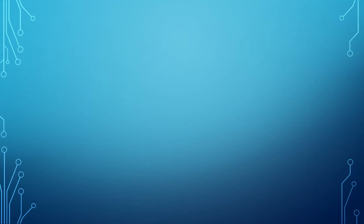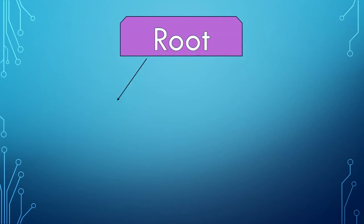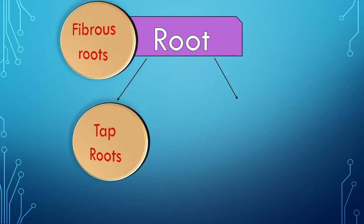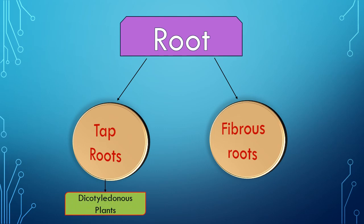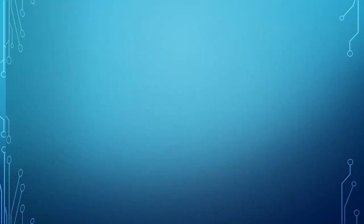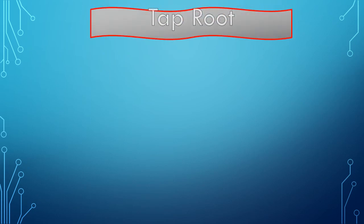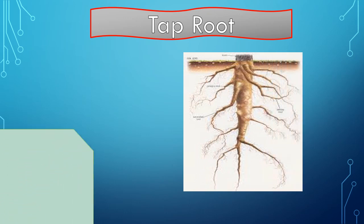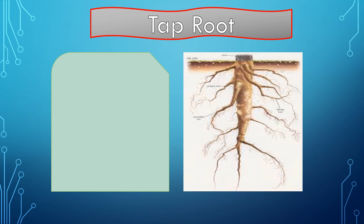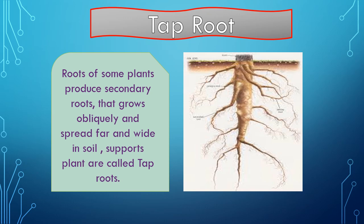The roots are of two different types: the first type is tap roots, while the second type is fibrous roots. Tap roots are found in dicotyledonous plants, while fibrous roots are found in monocotyledonous plants. Tap roots are the roots of some plants which produce secondary roots that grow obliquely and spread far and wide in the soil to support the plant. Tap roots grow deeply into the soil.